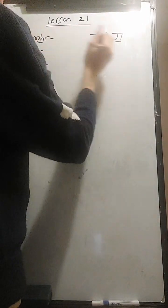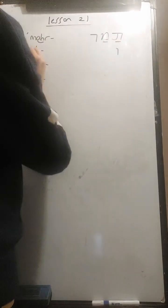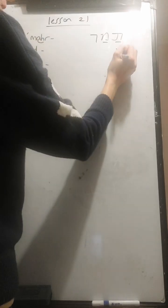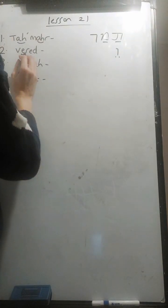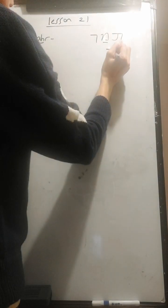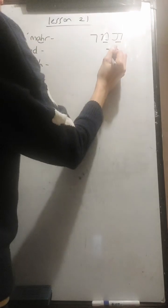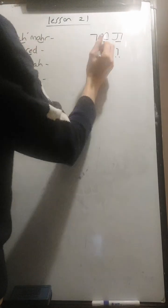The second one, vered. So we'd need a V. Then you can use the E vowel in it. VE. R. So we need the resh again. And the D at the end, vered.